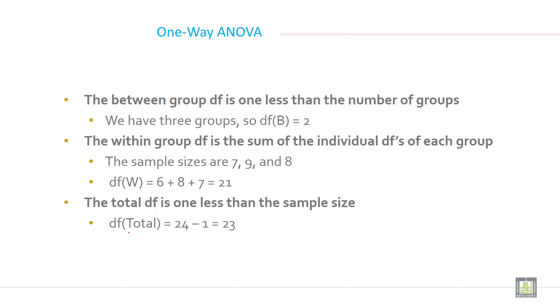The between group degree of freedom is one less than the number of groups. We have three groups, so degree of freedom between groups will be 2. The within group df is the sum of the individual degree of freedom of each group. The sample sizes are 7, 9, and 8. So degree of freedom within the group will be 6 plus 8 plus 7, which is 21. The total degree of freedom is one less than the sample size. So the sample size is 24 minus 1, so it is 23.